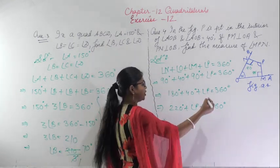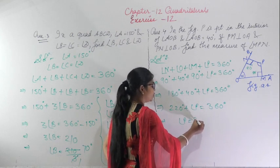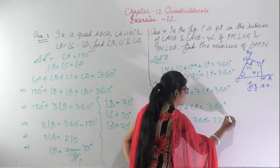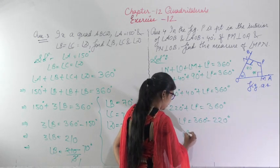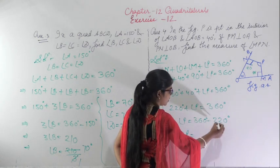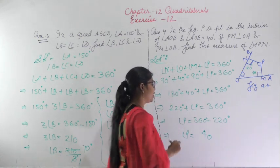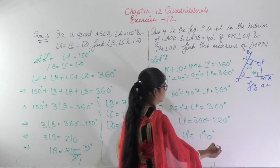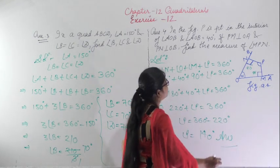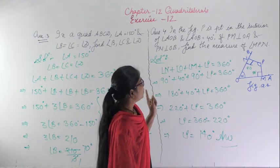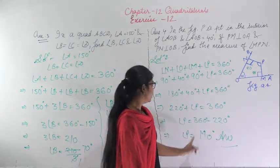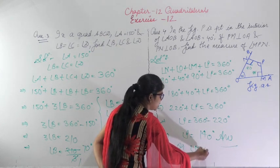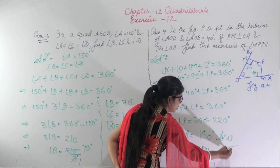Transferring 220 degrees to the right-hand side: angle P equals 360 degrees minus 220 degrees. So angle P equals 140 degrees. Therefore angle MPN equals 140 degrees.